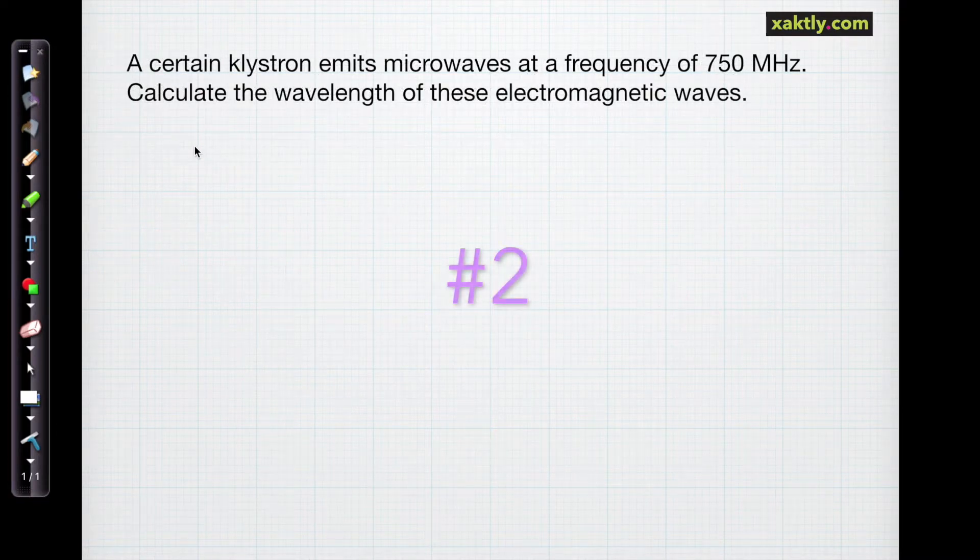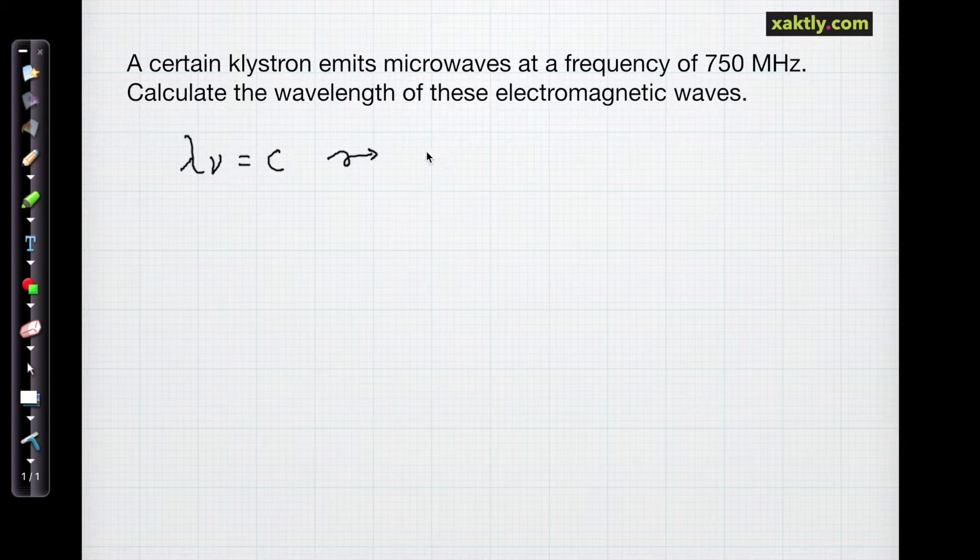Now in our second problem we want to solve for wavelength given a frequency of 750 megahertz. A klystron is something that you might find in your microwave oven. It generates microwaves. So we'll write down our expression lambda times nu is equal to c. We want to solve for lambda the wavelength. So we'll divide both sides by nu. So lambda is equal to c over nu.